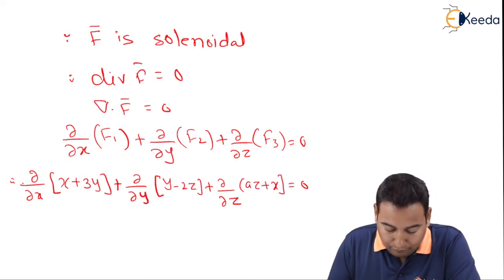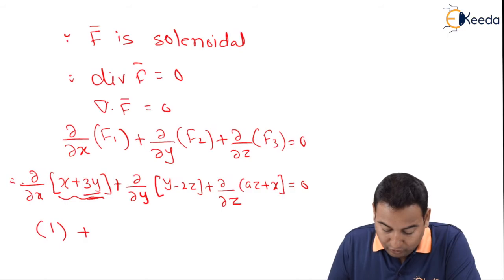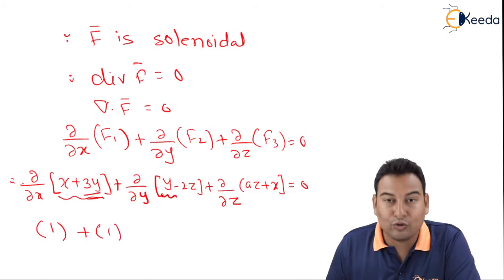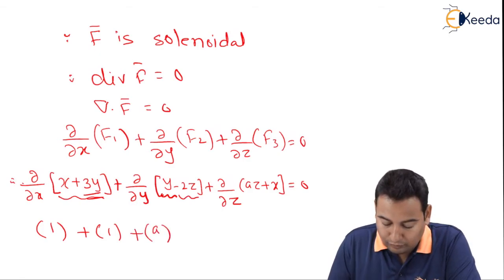Let's differentiate. With respect to x, it is 1. 3y derivative is 0. With respect to y, this is 1. Minus 2z derivative is 0. With respect to z, this is a, x derivative is 0, which is equal to 0.